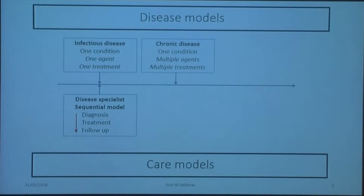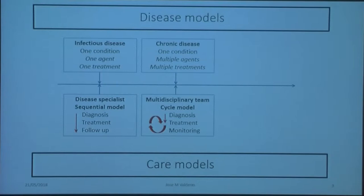Then we gradually moved, with the epidemiological transition, to the recognition of the importance of chronic disease. And these are different types of conditions. You tend to have one condition, but you have multiple agents and multiple treatments. And the health systems adapted to that by using a cycle model, where diagnosis is made and then there's a continuous cycle of treatment and monitoring to check progress and readjust. And because of the multiple agents and multiple treatments, the notion of the multidisciplinary team was increased in relevance.